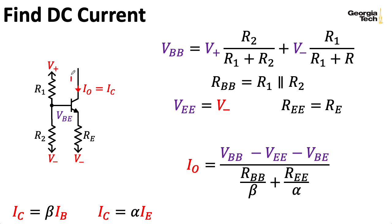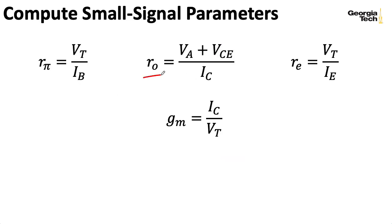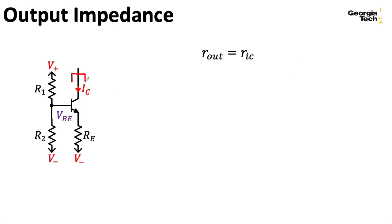Now to figure out how good this current source is, we also want to think about the small signal output impedance looking into the collector. And for that, we can take our collector current here and plug it into the usual quantities to compute various small signal parameters. And in particular, we're going to use RO and RE. The output impedance is just going to be RIC, the impedance seen looking into the collector. And for that, we can use this nice formula here. And for this formula, we need RTE and RIE. Well, RTE, the Thevenin equivalent looking out of the emitter. That's just RE.